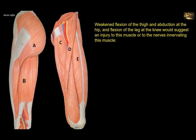Weakened flexion of the thigh and abduction at the hip and flexion of the leg at the knee would suggest an injury to this muscle or to the nerves innervating this muscle. Now let's identify the muscles first. Muscle A is the gluteus maximus muscle and this is an extensor — a very powerful extensor of the hip. Although it abducts the hip, it is not a flexor, and it doesn't flex the leg. It keeps the knee in the extended position through its action on the iliotibial tract. So it is not A.